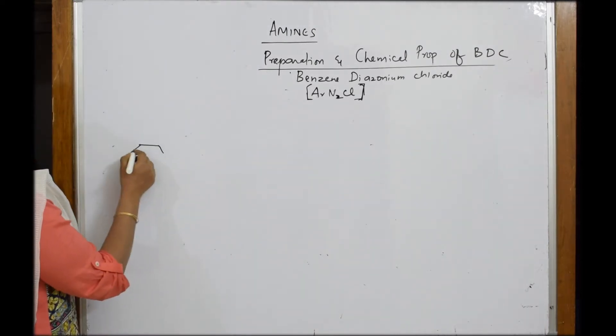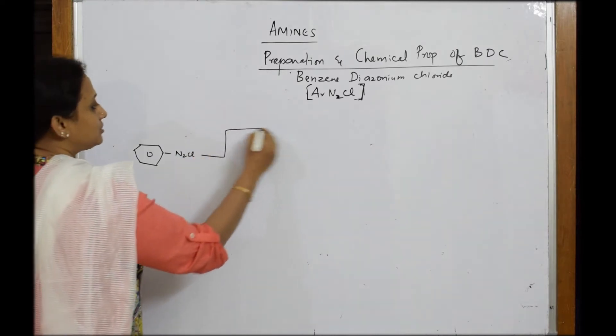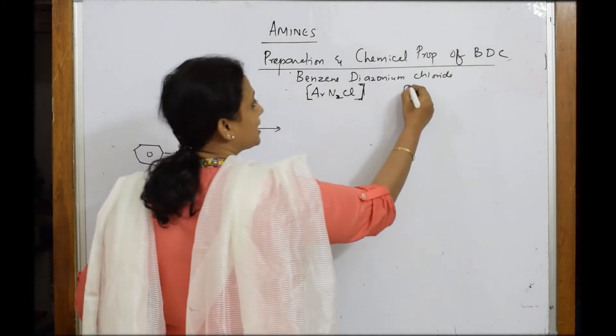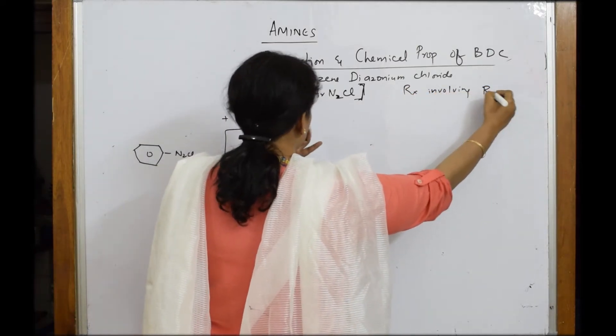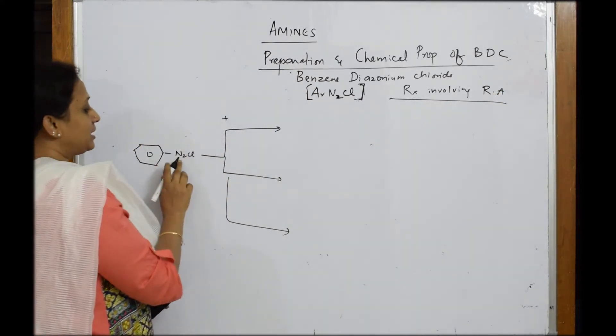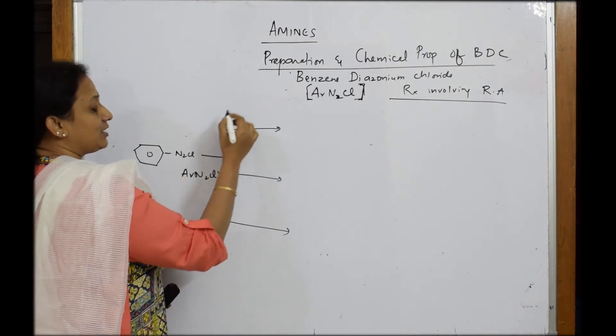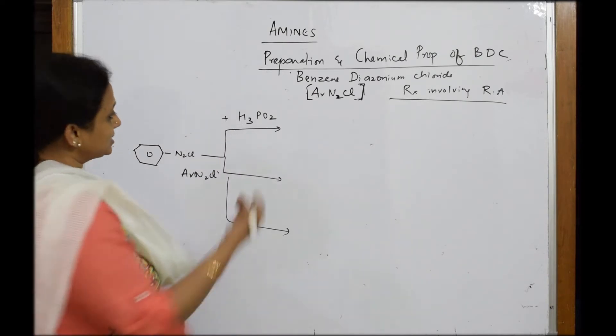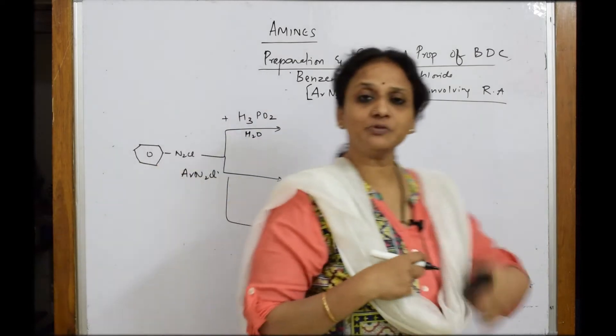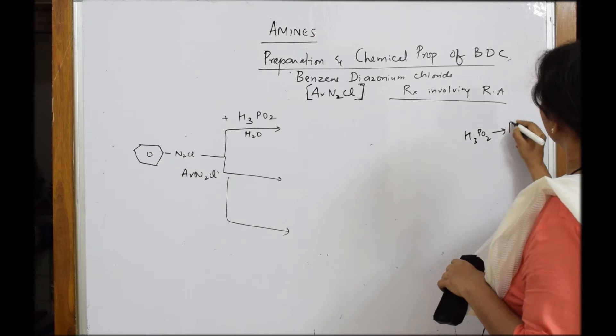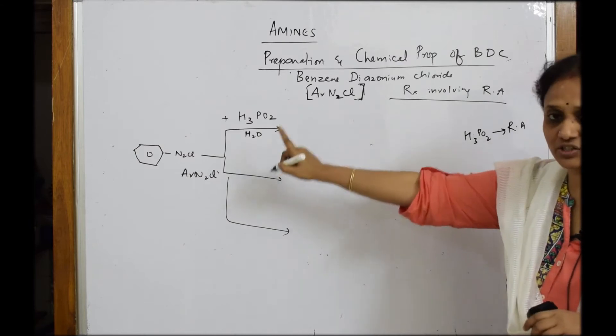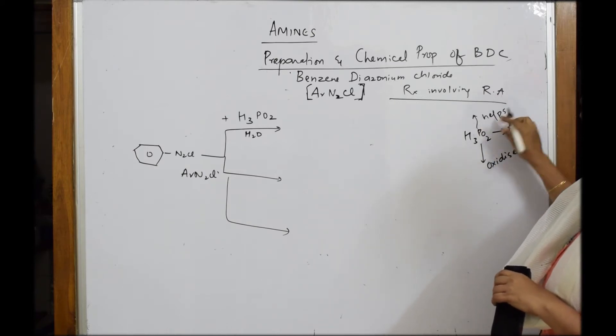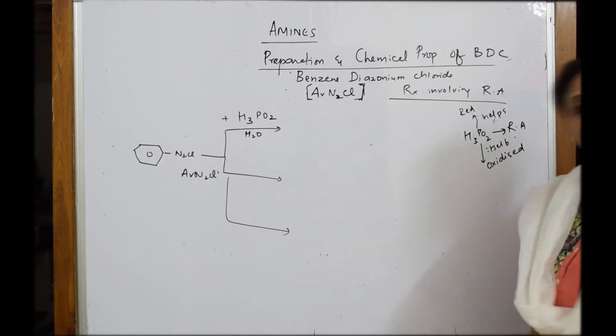Now if I have to take this BDC, I'm going to introduce or show you three important conditions. Here I'm going to take BDC and introduce a reducing agent. So we are going to write reactions involving reducing agents. What are the reducing agents which I'm going to use? If you see ArN2Cl and this particular thing - what is this? Hypophosphorous acid. H3PO2 is hypophosphorous acid and even water also is a reducing agent. So what does it do? It helps in reduction and itself gets oxidized. That is the condition - reducing agent helps in reduction but itself gets oxidized.